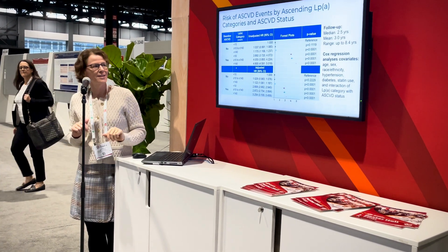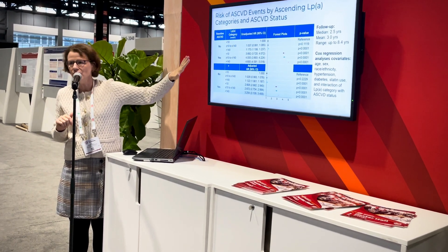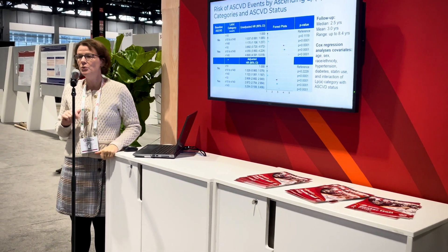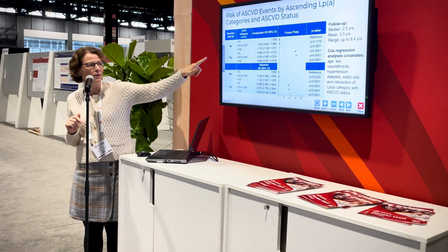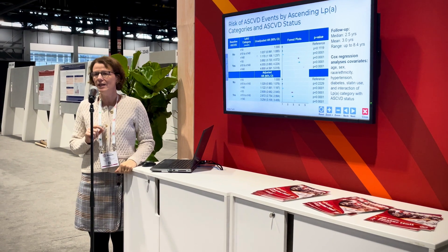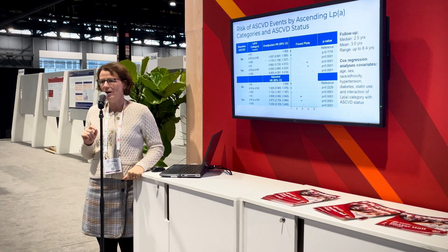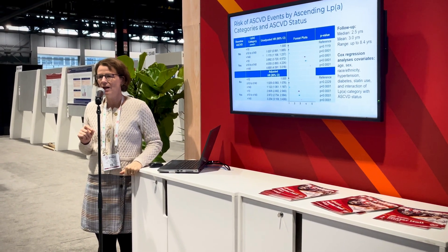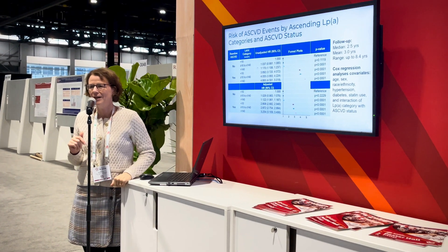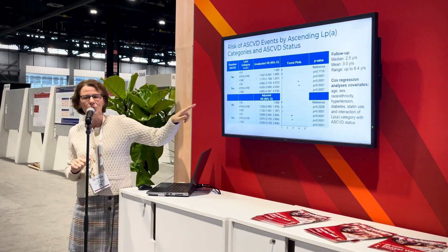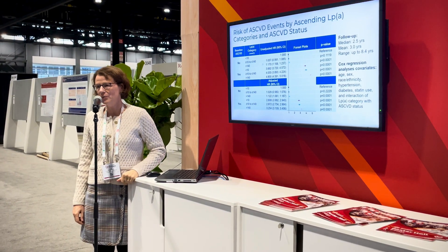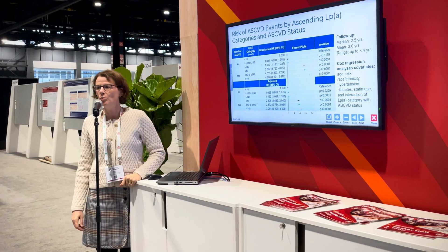These are our results. The top part is an unadjusted hazard ratio; the bottom is adjusted. Compared to the reference group, individuals who did not have ASCVD but had an LP(a) level greater than 140 had their risk of having an event increased by 17% in the unadjusted model and 12% in the adjusted model. For individuals who did have baseline ASCVD, the pattern across increasing LP(a) categories is similar, and notably, those with ASCVD and an LP(a) level greater than 140 had their risk increased more than threefold.